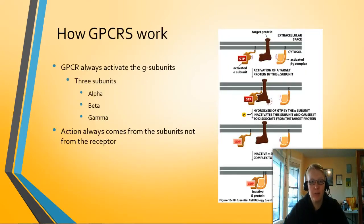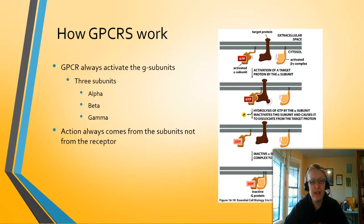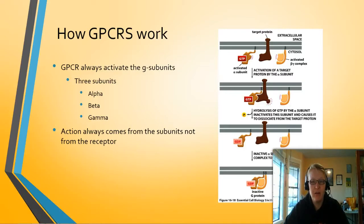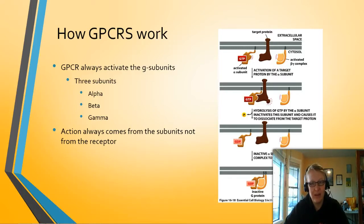Let's look at an example of how these work. The GPCRs are always going to activate the G subunits — alpha, beta, and gamma — and remember, beta and gamma are always partners. These actions come from the subunits, not the receptor. That green receptor just passes along the signal and begins the signal transduction pathway. This always starts with the alpha subunit having the ability to hydrolyze GTP to GDP. Once hydrolyzed, it goes to GDP and becomes an inactivated protein, and the whole complex comes back together to be reactivated the next time the signal is received.